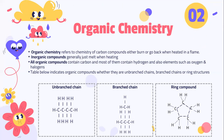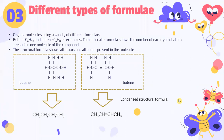Most organic compounds contain hydrogen, and also elements such as oxygen and halogens. The table below indicates different types of structure. We have unbranched chains, where carbons are in a horizontal position surrounded by hydrogen. Branched chains have carbons in both vertical and horizontal positions. Ring compounds have carbons arranged in a ring structure surrounded by hydrogen.